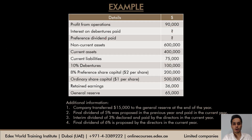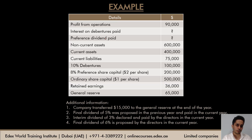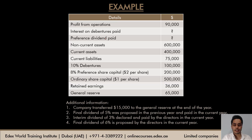In our example, profit from operations is directly given as 90,000. We need to calculate interest on debentures and preference dividend. Looking at the trial balance, we have 10% debentures of 100,000 and 8% preference shares of 200,000. Balance sheet items are present, and we need to prepare the income statement, statement of changes in equity, and balance sheet. Additional information covers a transfer to general reserve, and details about interim and final dividends for both the current and previous year.